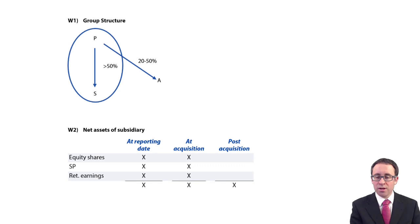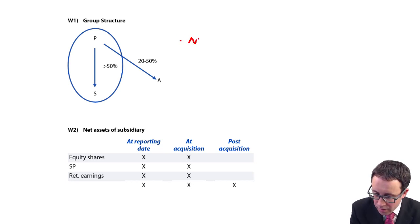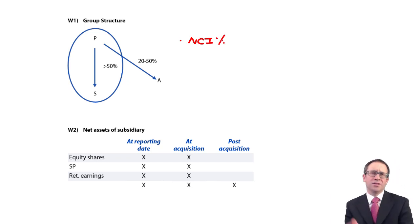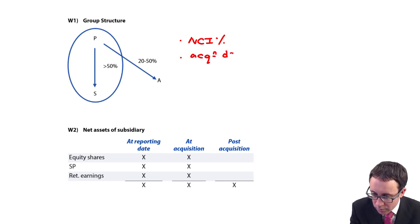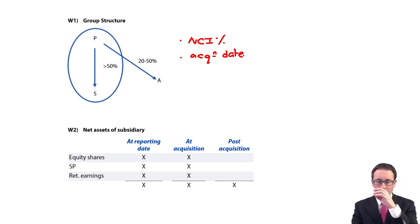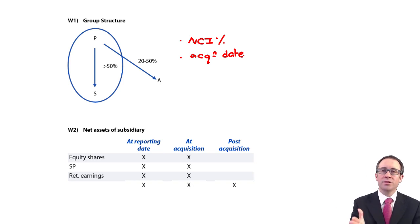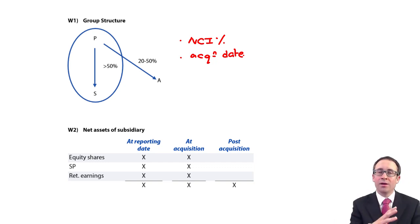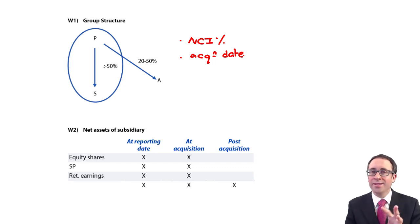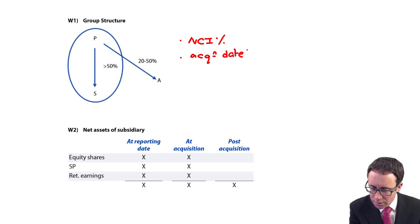You've got the parent, you've got the subsidiary. P owns greater than 50% of S, so therefore S is the subsidiary. What I would be noting there is the non-controlling interest percentage — don't try and remember it, write it down somewhere on the page. I would also note the acquisition date. That's going to be important as we move along, because at the moment we've only seen the acquisition date at being the start or end of a calendar year, and the reporting date at the end of the calendar year. In the exam it might be a little bit challenging, so make sure that you note the acquisition date.